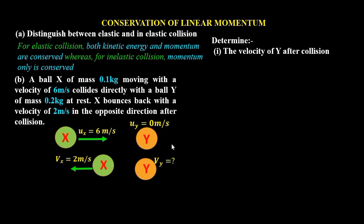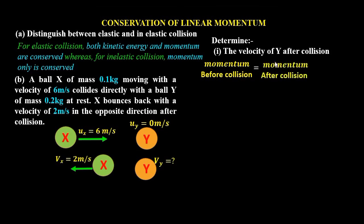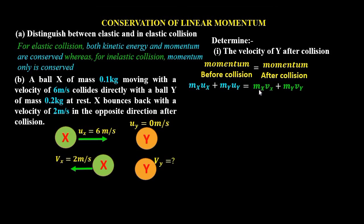From the principle of conservation of linear momentum, the total momentum before collision equals the total momentum after collision. This gives us the equation: mass of X times its velocity before collision, plus mass of Y times its velocity before collision, equals mass of X times its velocity after collision, plus mass of Y times its velocity after collision.